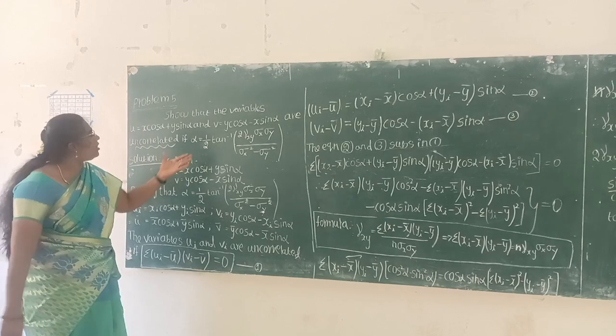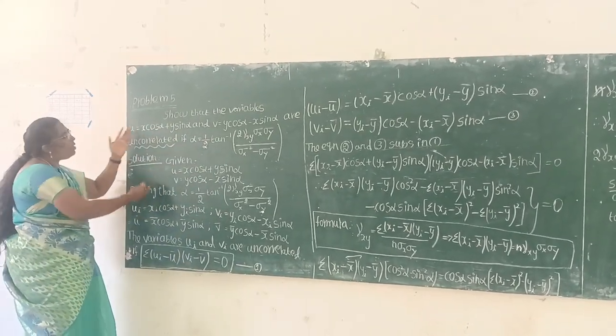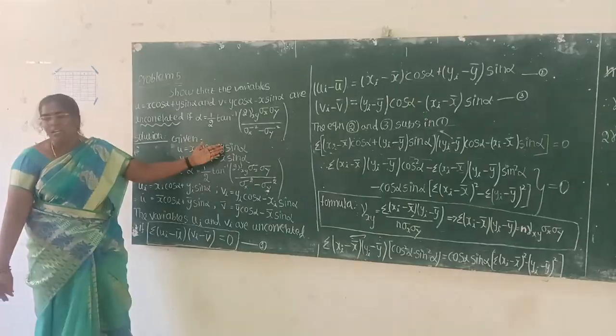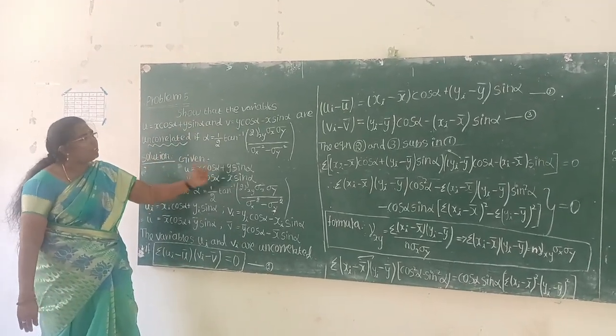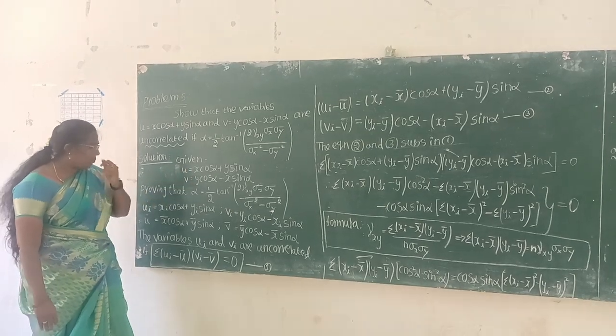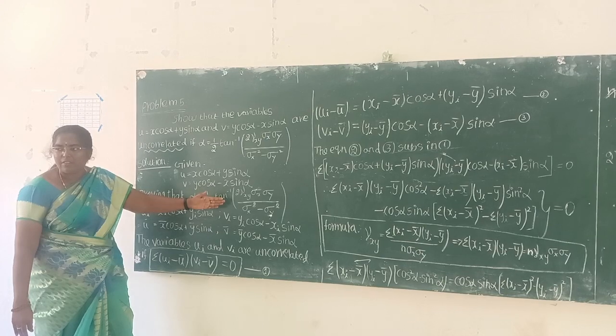We will show you the proof of the equation. u equals x cos alpha plus y sin alpha. What is v? y cos alpha minus x sin alpha. If we prove this, we will find alpha equals one-half tan inverse of this portion.